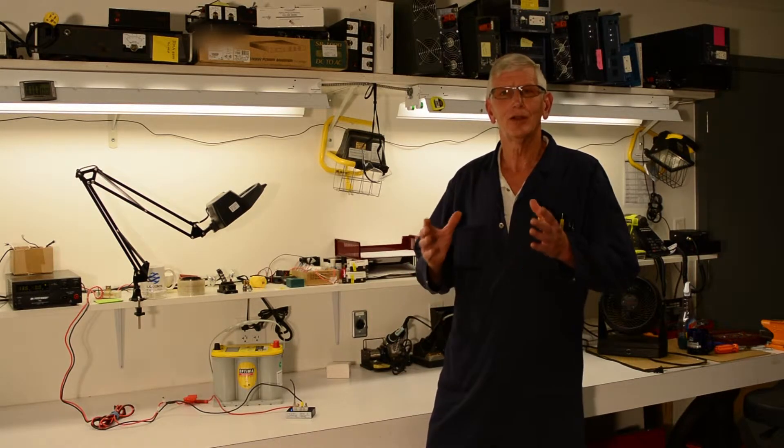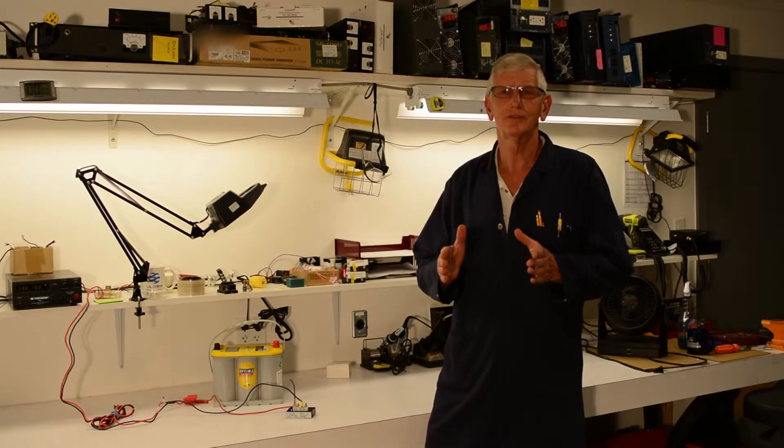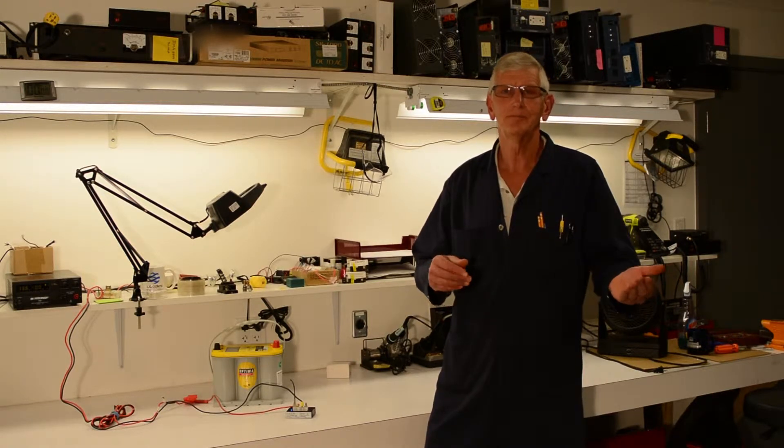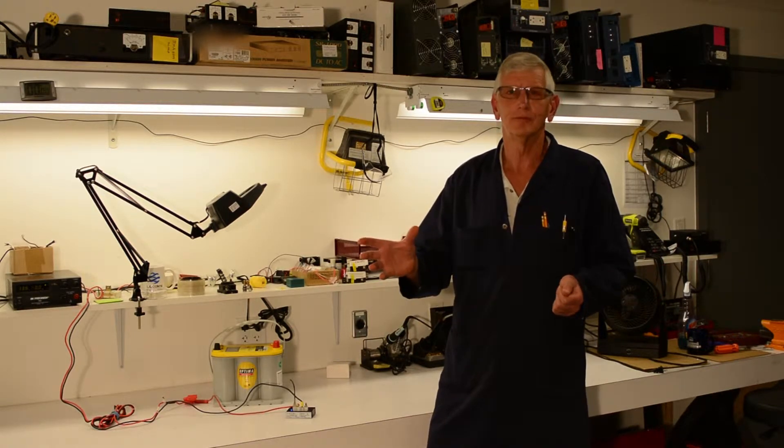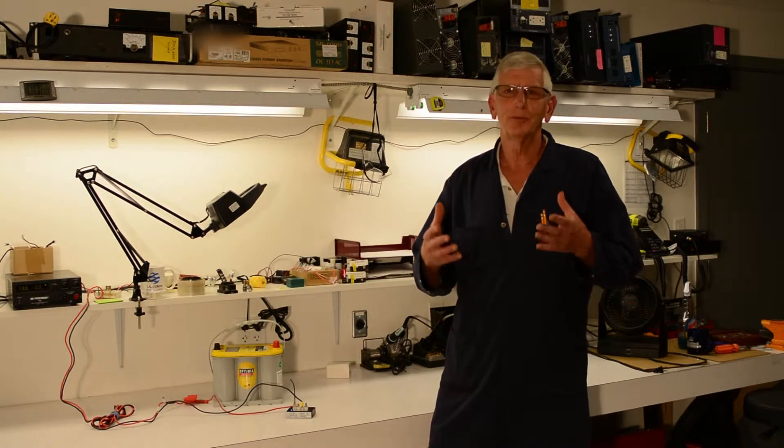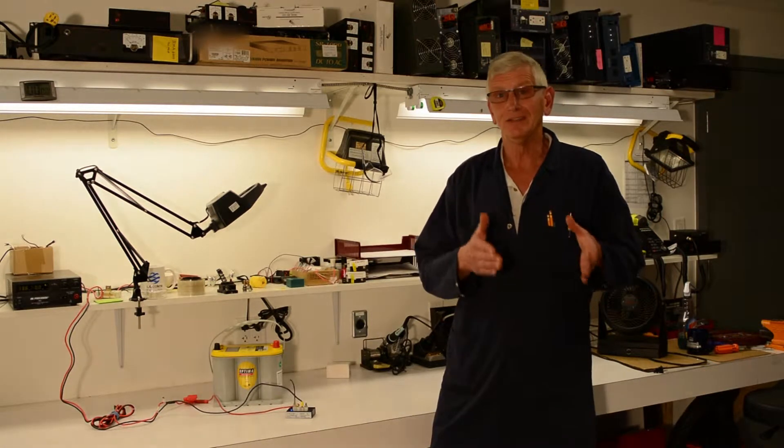The battery guard is a voltage sensitive disconnect that sits between your battery and your load, like an inverter. It's designed to prevent your battery from being deep discharged.